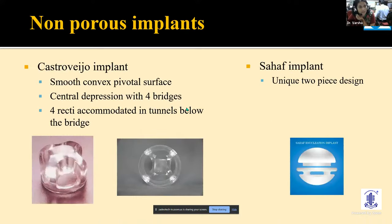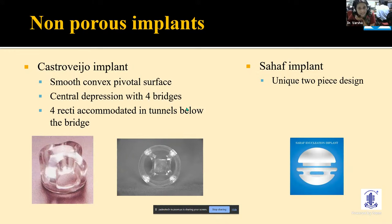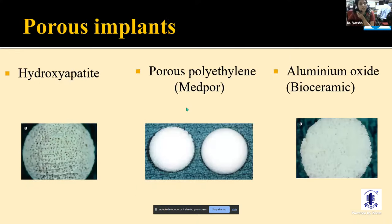The Castroviejo implant has a smooth convex pivotal surface with a central depression and four bridges for suturing the four recti muscles. The half implant is a unique two-piece design originating from Pakistan. These represent the foundational non-porous implant designs.